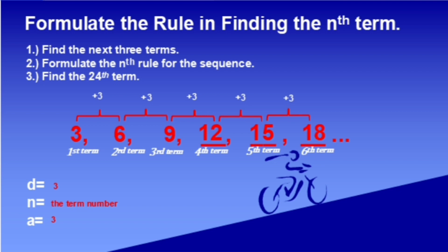Try to imagine that there is a number before the first term. How will you get that? By simply subtracting the first term by the constant difference. We have 3 minus 3 equals 0. Using this idea, we can now have the formula: D times n plus A minus D, where D is the difference, n is the nth term, and A is the first term.